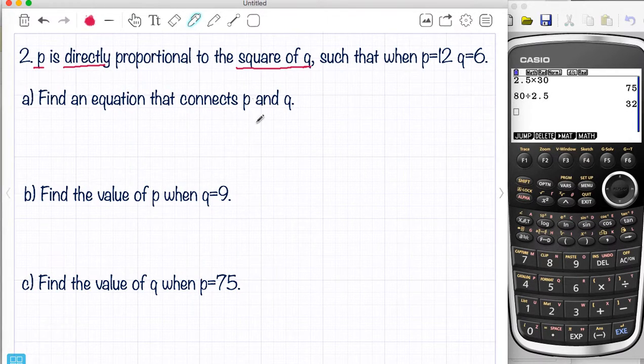So find an equation that connects P and Q. So I'm going to start off by saying P equals K. The square of Q means Q squared. So now that's my starting point. P and Q will change, but K will stay the same.